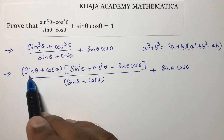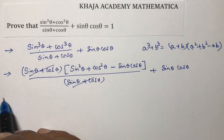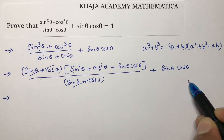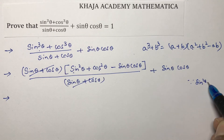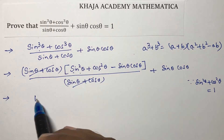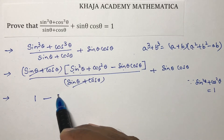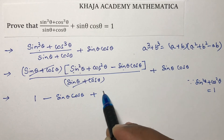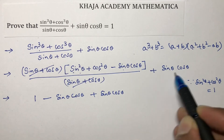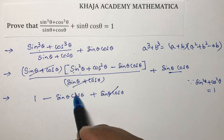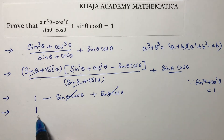Now sinθ + cosθ in the numerator and denominator will cancel. We use the identity sin²θ + cos²θ = 1. So this becomes 1 - sinθ cosθ + sinθ cosθ. The sinθ cosθ terms cancel, and we are left with 1.